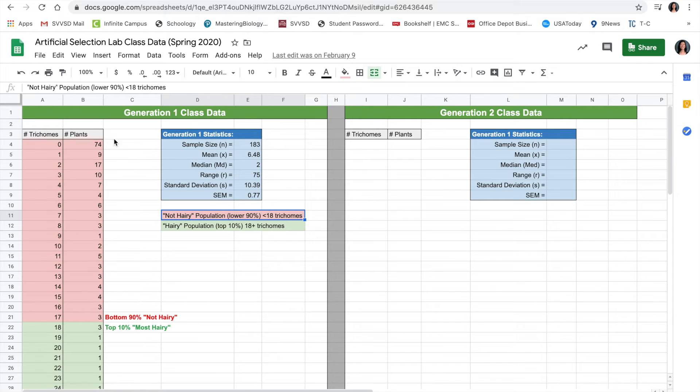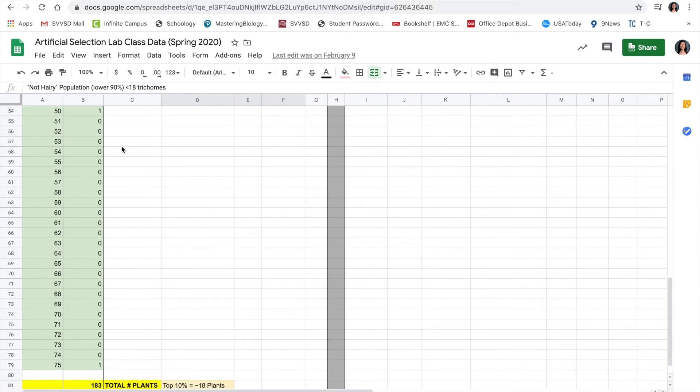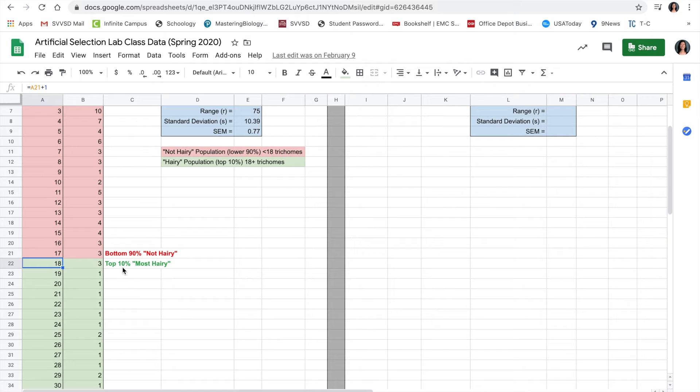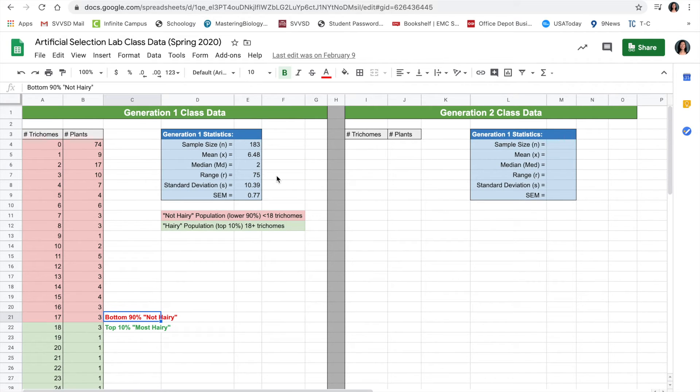Here's the generation one class data. We recorded for every single plant how many trichomes were on it. Overall, in the class, there were 183 plants that sprouted, and the top 10% of those 183 plants is about 18 plants. The top 10% had 18 trichomes or more, and the bottom 90% had 17 trichomes or less. I calculated the mean, which was 6.48 trichomes on average per plant. The standard deviation was 10.39, and the standard error of the means was 0.77.